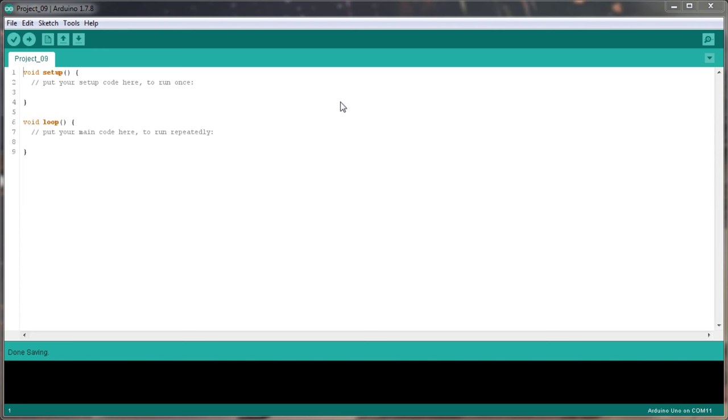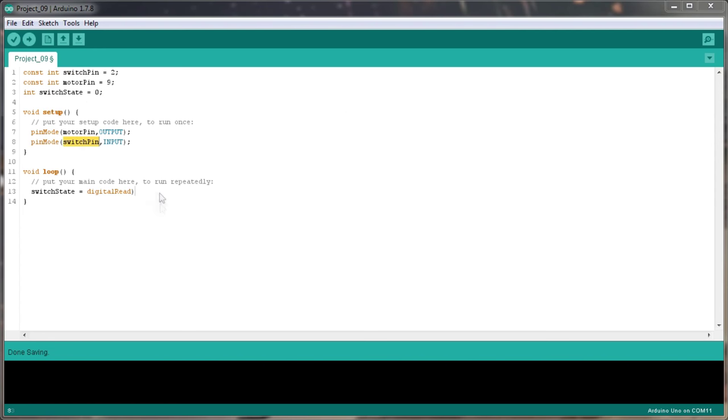Okay, here we are in the code, let's get cracking. Okay, that's all there is to the code. It's actually ridiculously simple. We're just setting up the pins, motor pin's the output, switch pin's the input. We're reading in the switch state of the actual switch pin. If the switch state is high, then digital write the motor pin high, else digital write the motor pin as low. So that's all there is to that.